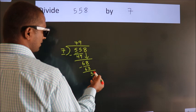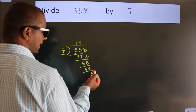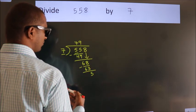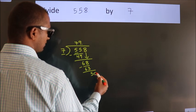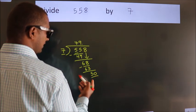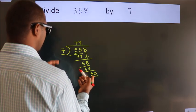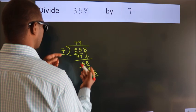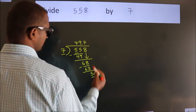After this, no more numbers to bring down. So what we do is we put dot, take 0. So 50. A number close to 50 in 7 table is 7 sevens, 49.